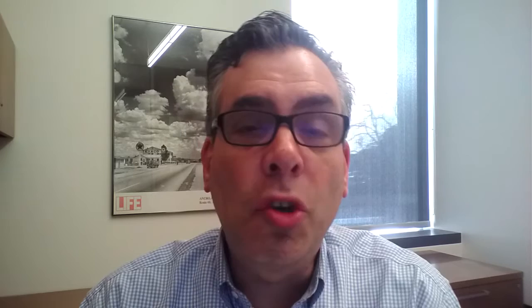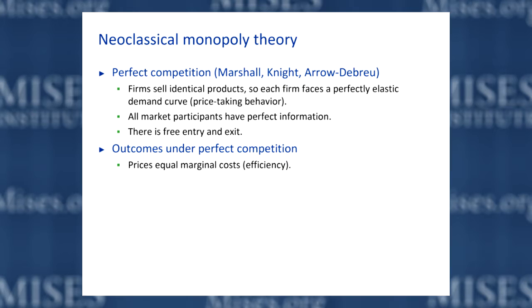So why does anybody care? Under perfect competition, according to the standard neoclassical theory, we get the best possible outcomes in terms of efficiency and consumer well-being. All prices are exactly equal to the marginal costs of production, because it's assumed that each seller looks at the market price, looks at his or her own marginal cost curve, and sets quantity where the marginal cost curve and the market price intersect. So every firm is producing where price equals marginal cost.